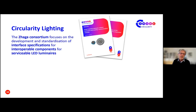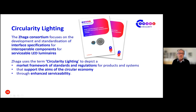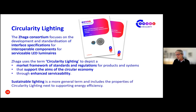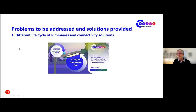Saga is thus part of a set of rules that support and promote the goals of the circular economy. Some regulatory requirements with the same goal are already enforced on a predominantly regional level, and we expect more to come. Other market requirements are also conceivable in this area in the future. In this context, Saga uses the term 'circularity lighting' to depict a market framework of standards and regulations for products and systems that support the aims of the circular economy through enhanced serviceability. Sustainable lighting is a more general term and includes the properties of circularity lighting next to supporting energy efficiency.